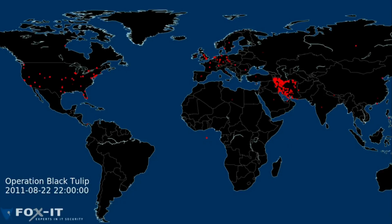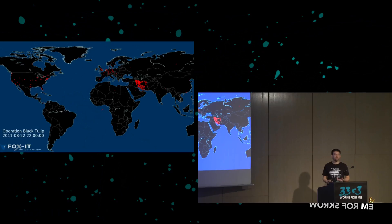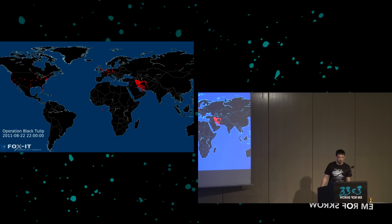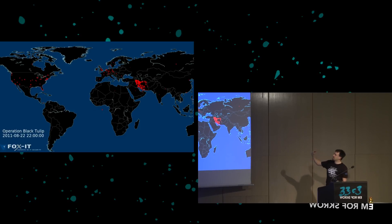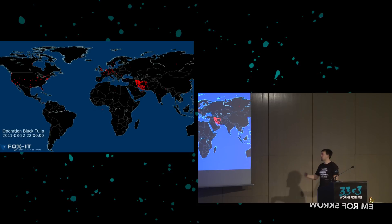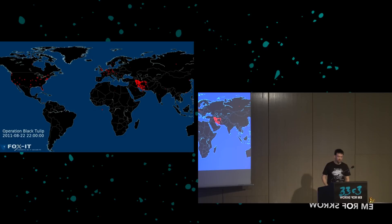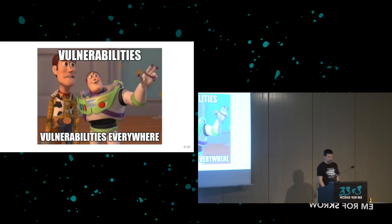The guys from FoxIT who investigated this breach used the OCSP request. Every time you get a certificate, your browser has to figure out whether it is still valid. One approach used is OCSP — the client asks the certificate authority if the certificate is still valid. Each of these requests is one client seeing the fraudulent certificate and asking DigiNotar if it's still valid. Most of the people were from Iran. So how did DigiNotar get hacked?